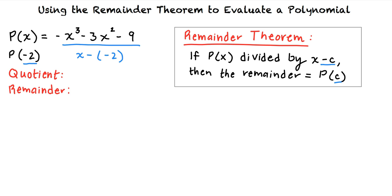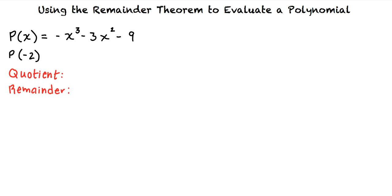We will now do the division. First, we will rewrite p of x equals negative x cubed minus 3x squared minus 9 as p of x equals negative x cubed minus 3x squared plus 0x minus 9. Next, we will write each of these coefficients underneath the division symbol.